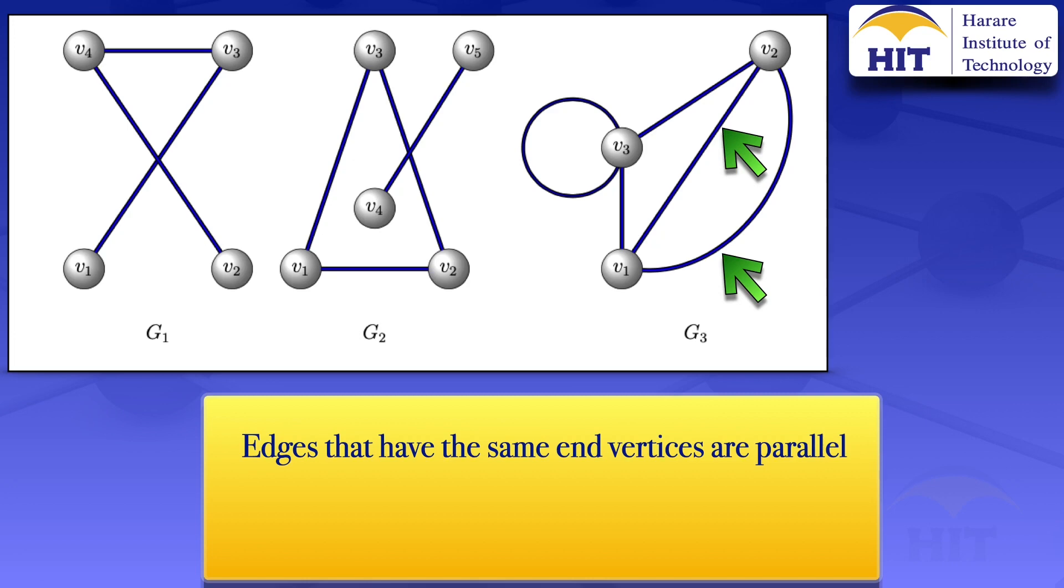For the second definition, an edge of the form (v,v) is a loop. What we're saying is an edge which starts and ends on the same vertex is said to be a loop. So in this case, if we look at this edge here, it's starting and ending at the vertex V3, and therefore that edge is a loop.